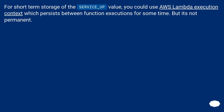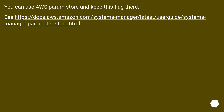For short-term storage of the service_up value, you could use the AWS Lambda execution context, which persists between function executions for some time, but it's not permanent. You can also use AWS Parameter Store to keep this flag there — see the provided URL for reference.